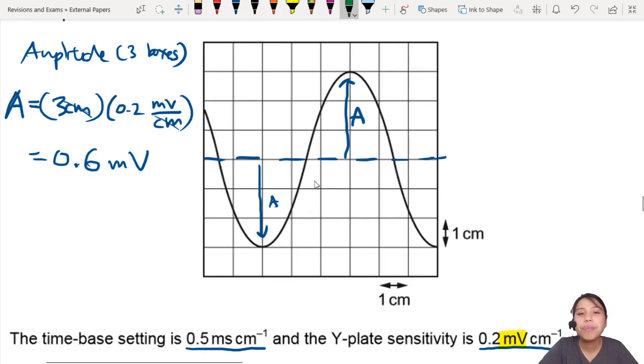Next, frequency. So to find frequency, you need to think, frequency? I need 1 over T. I need period. So okay, we find the period. What's the period?